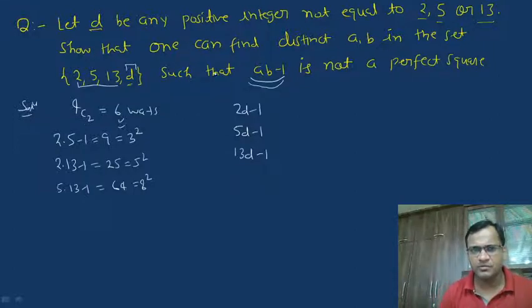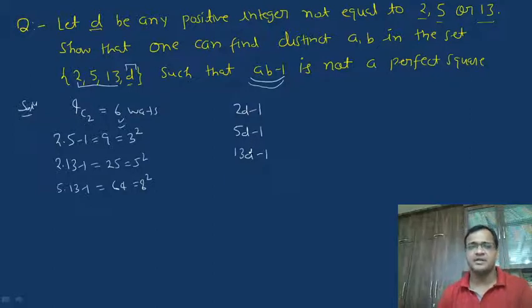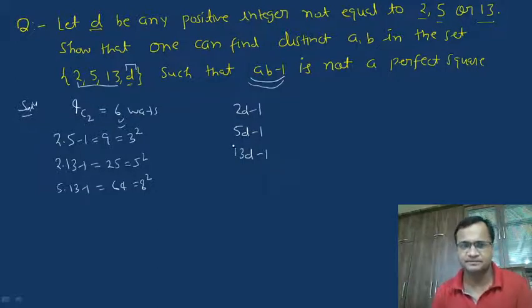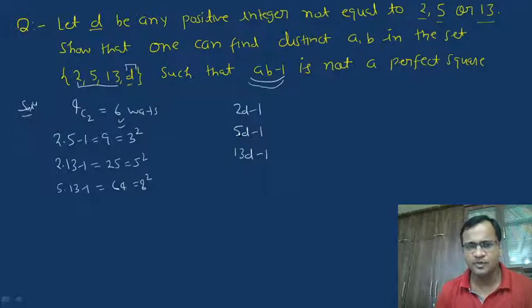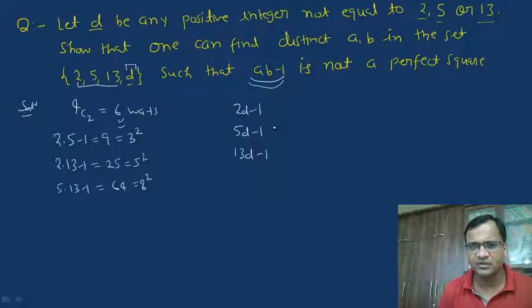Now I am focusing on the remaining three combinations, which are 2d − 1, 5d − 1, and 13d − 1. According to the problem, we have to show that all three of these combinations are not perfect squares simultaneously — that is, there exists at least one combination which is not a perfect square. I am going to prove this by the method of contradiction. So initially we suppose that all three terms are perfect squares.